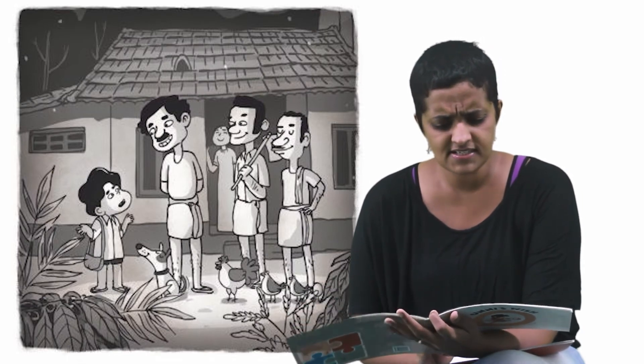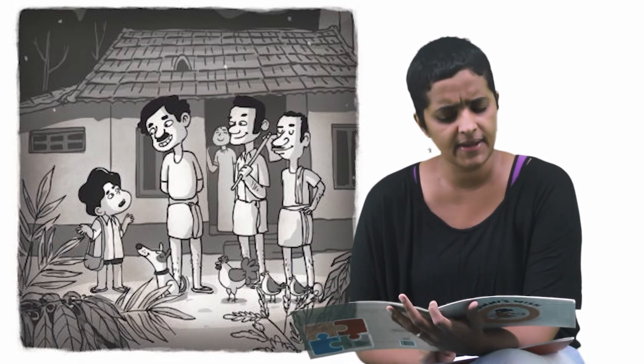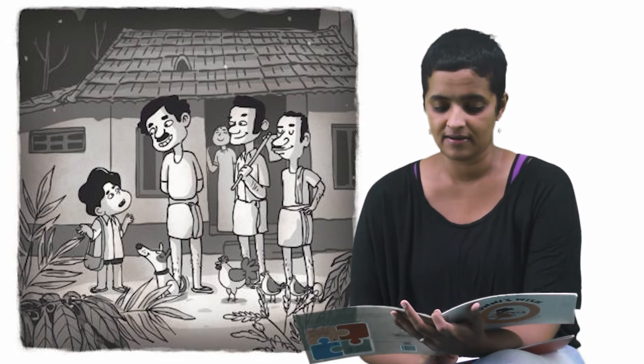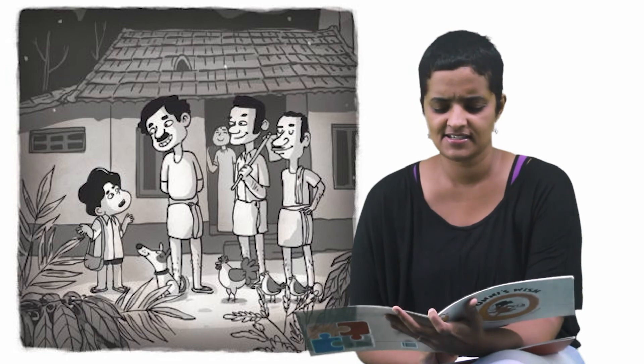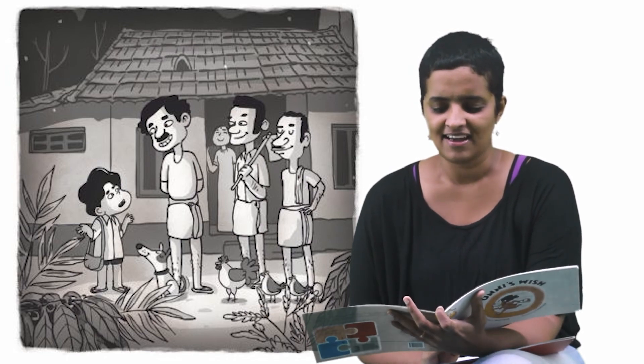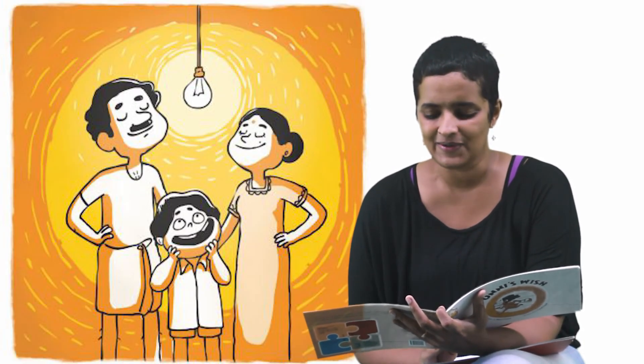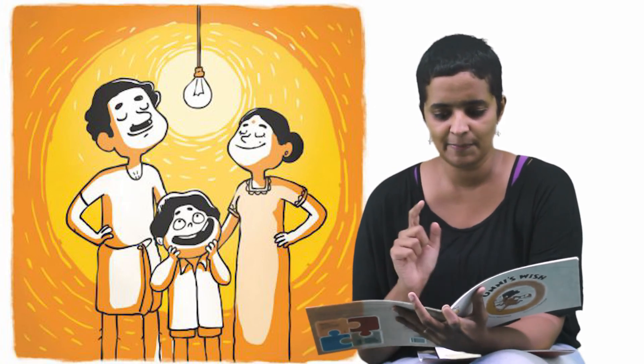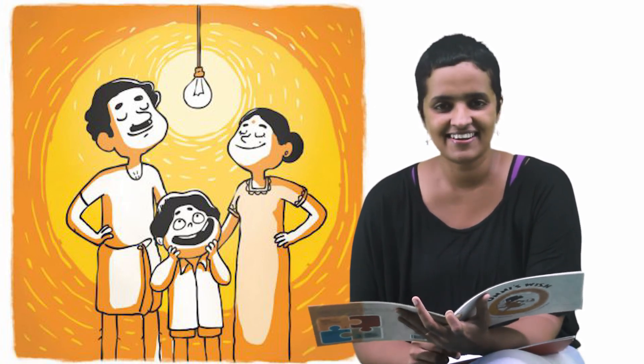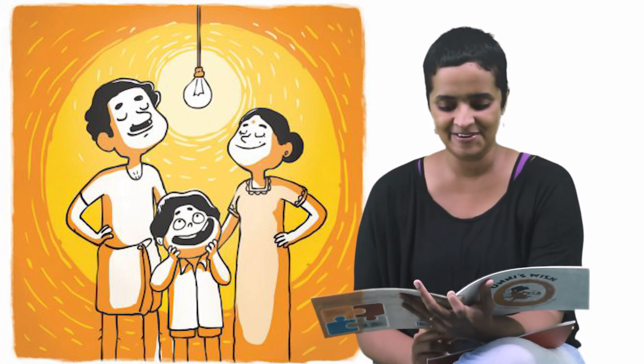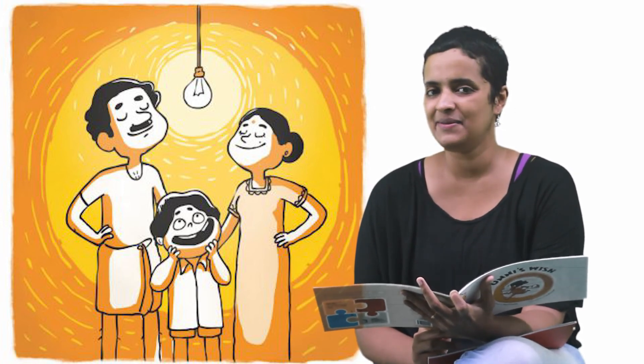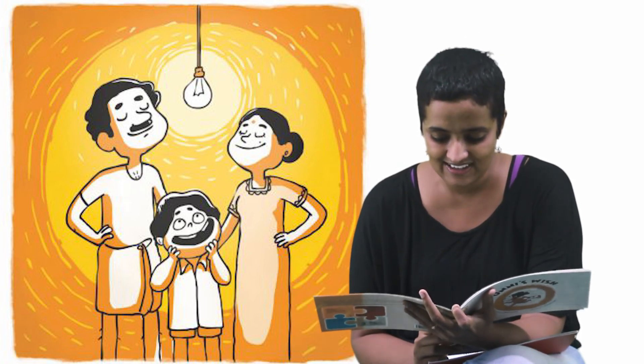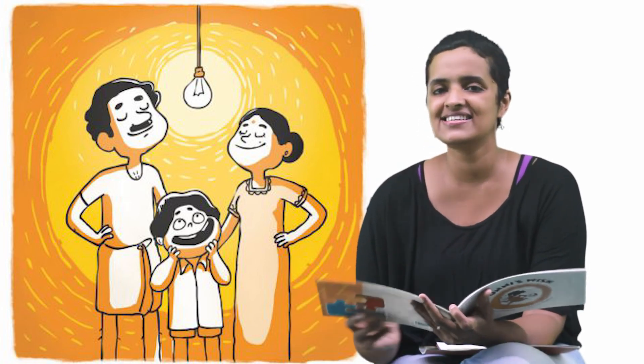Outside their house, Unni sees his father talking to some men. It's the men who made all that noise in the morning. What is happening, Achcha? Unni asks his father. Everyone turns and smiles at Unni. Amma points to a switch on the wall. Unni presses the switch and tada! The room lights up. Everyone claps. This can mean only one thing. I can't believe it, says Unni. Our house finally has electricity.